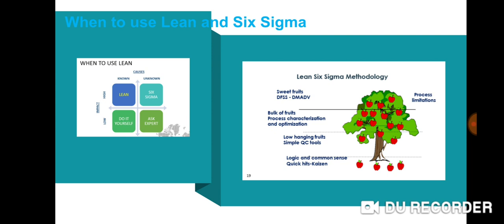On the left side you see: if the impact is low; if the impact is high and the cost is known, you know the cost, then you can go for Lean. If the impact is high and the cost is unknown, then the best thing is to go to Six Sigma, because Six Sigma requires analytical, statistical approaches of finding out the solutions.